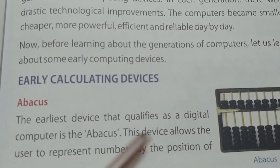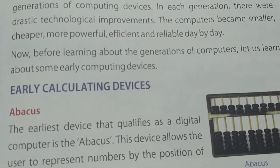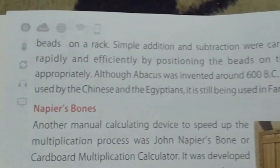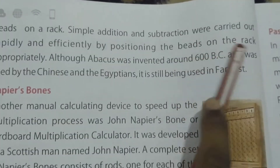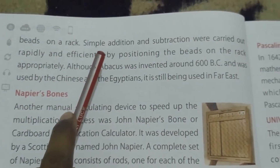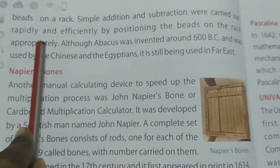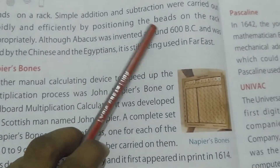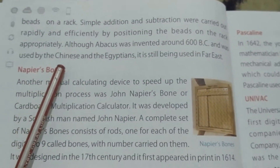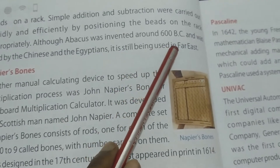The abacus allows the user to represent numbers by the positioning of beads on a rack. Simple addition and subtraction were carried out rapidly and efficiently by positioning the beads on the rack appropriately. Although the abacus was invented around 600 BC and was used by the Chinese and Egyptians, it is still used in the far east.